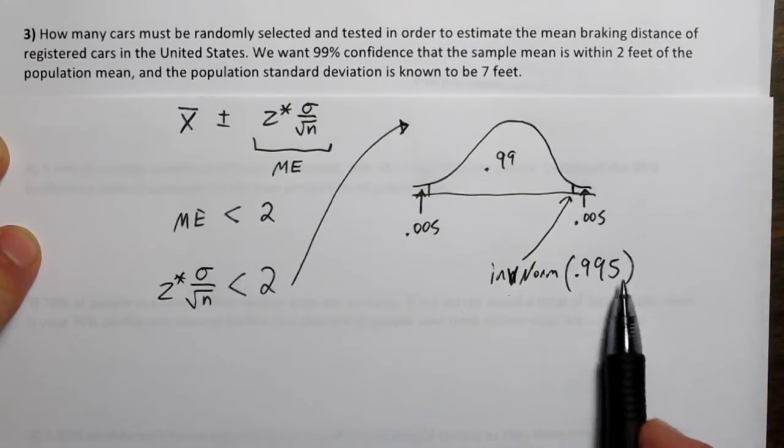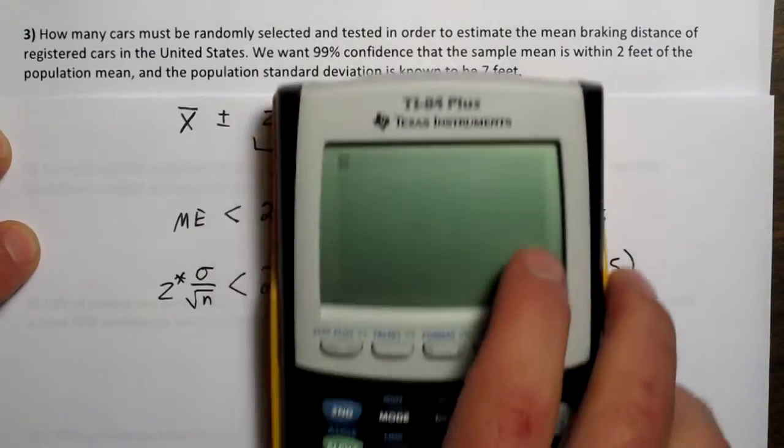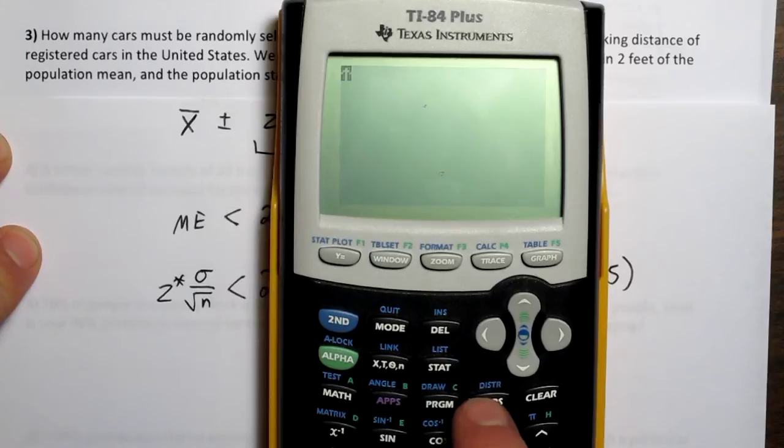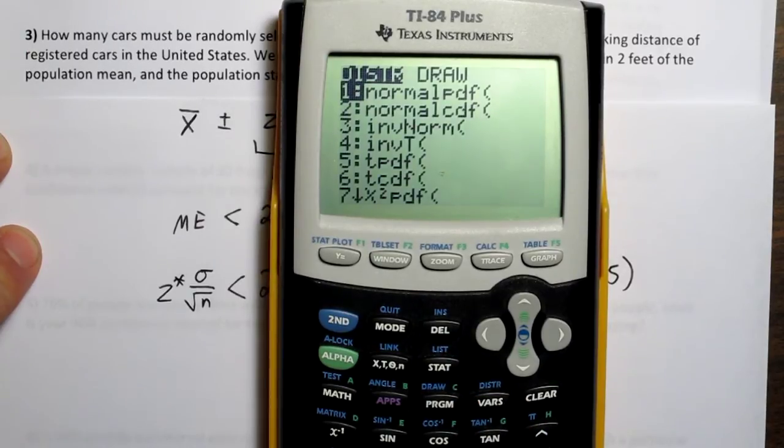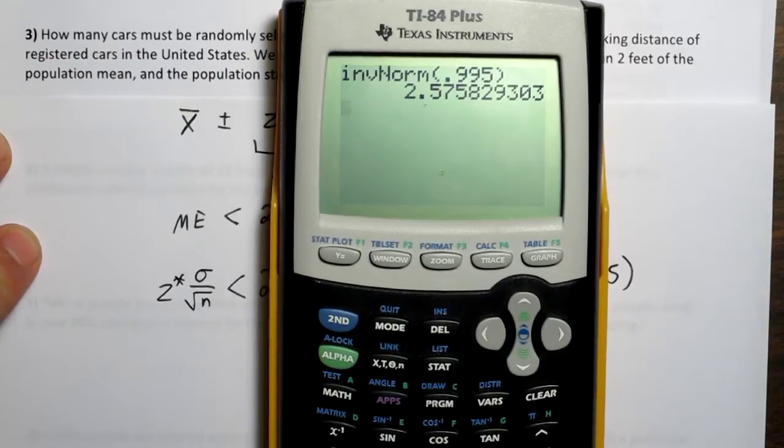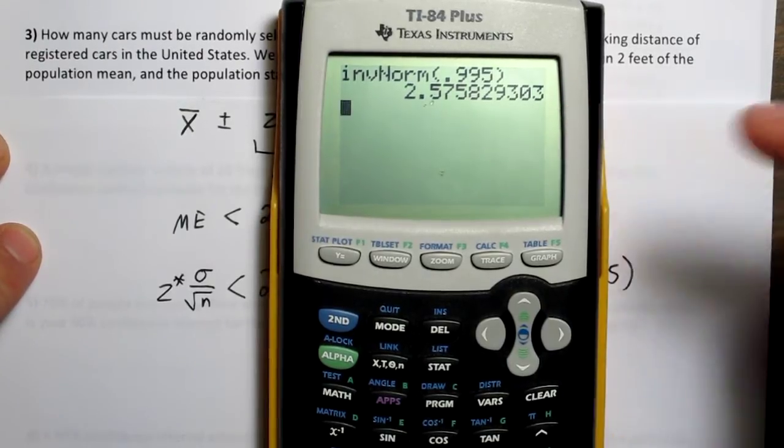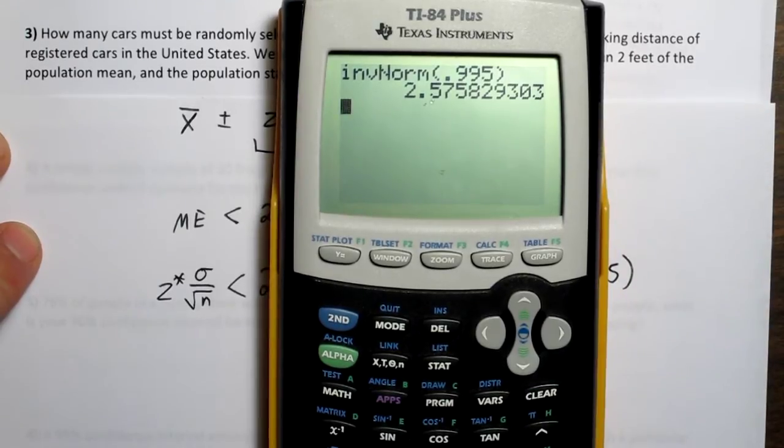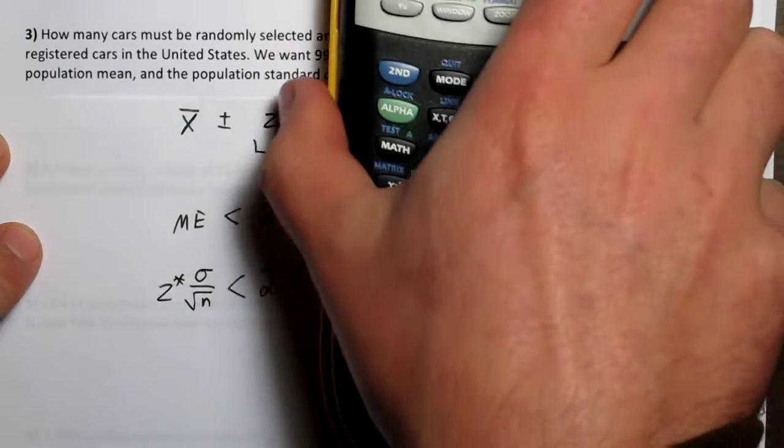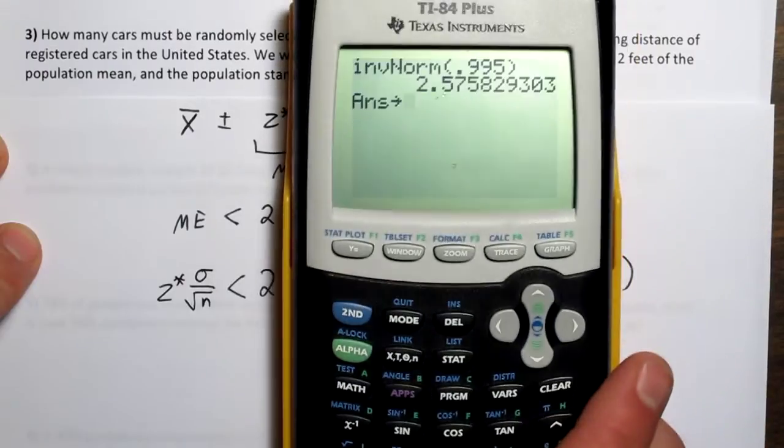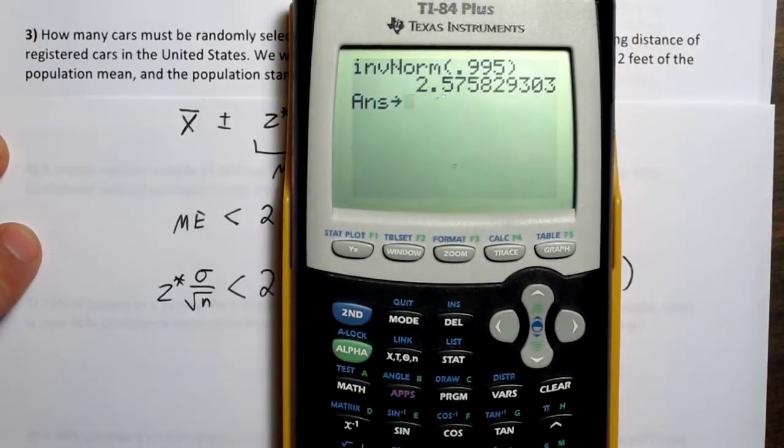If this is our cutoff value right there, to the left of that is 0.995. So here's how you get to inverse norm. Push second and then this vars button which accesses the distribution menu here, and go to inverse norm 0.995. So this is our critical value z star. It's very important that you don't round this value when you're calculating sample size because even a small rounding can affect your answer quite a bit. So to keep this value, what I'm going to do is push this STO button.